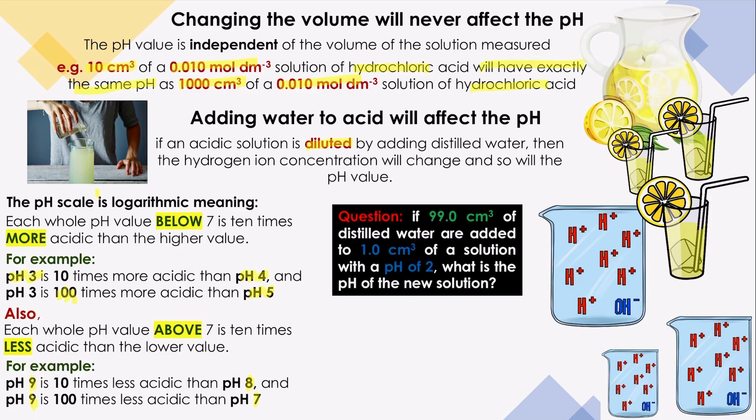Let's check this question. If you have 99 cubic centimeters of distilled water and you add them to 1 cubic centimeter of solution with a pH of 2, what is the pH of the new solution? The original solution volume was 1 cubic centimeter with pH 2. After adding 99 cubic centimeters, the total volume became 100 cubic centimeters.